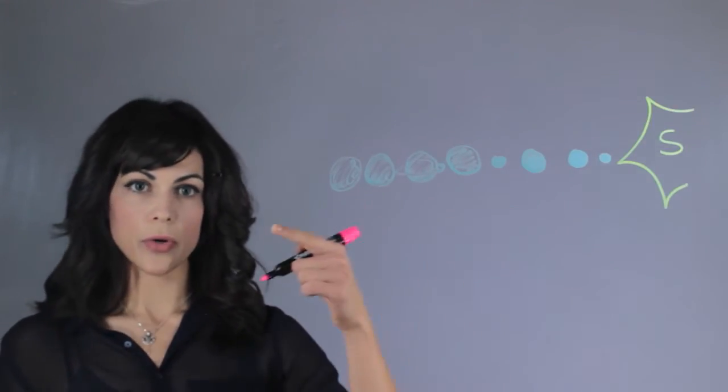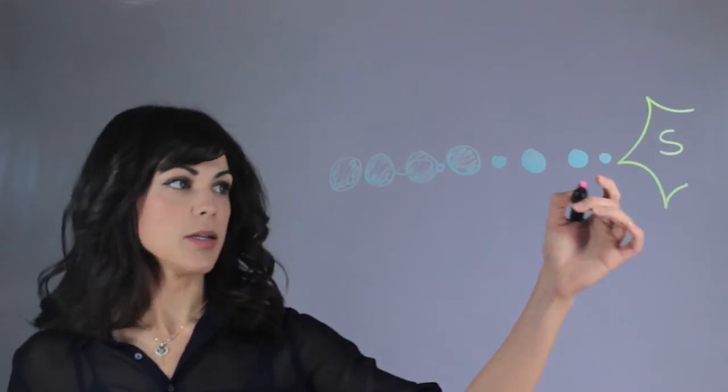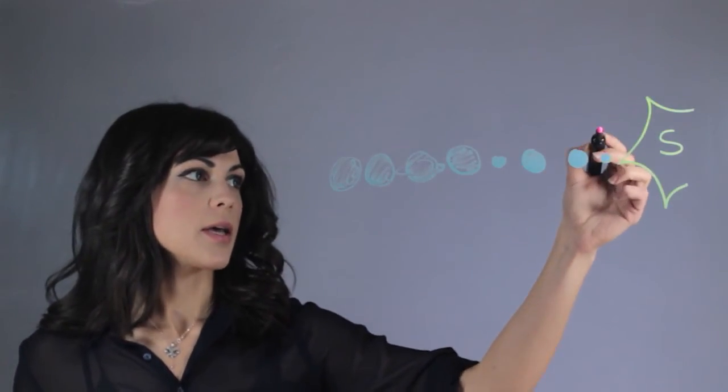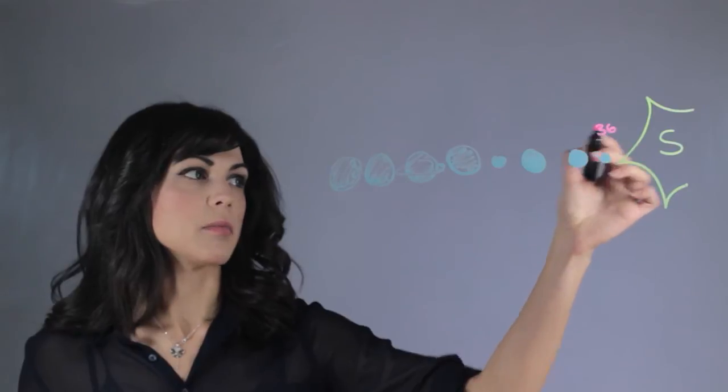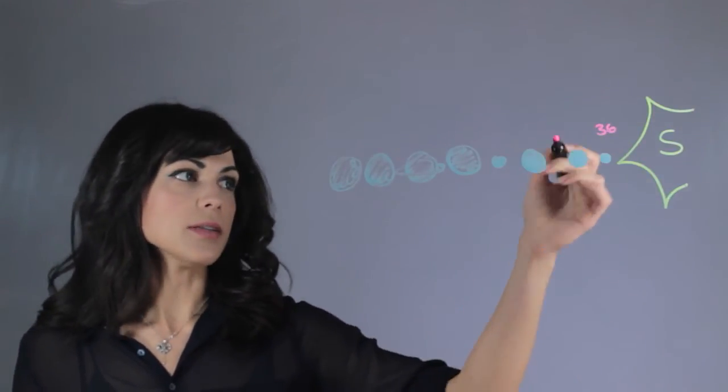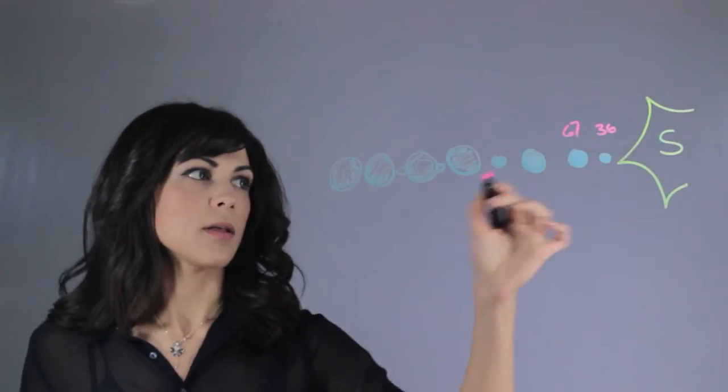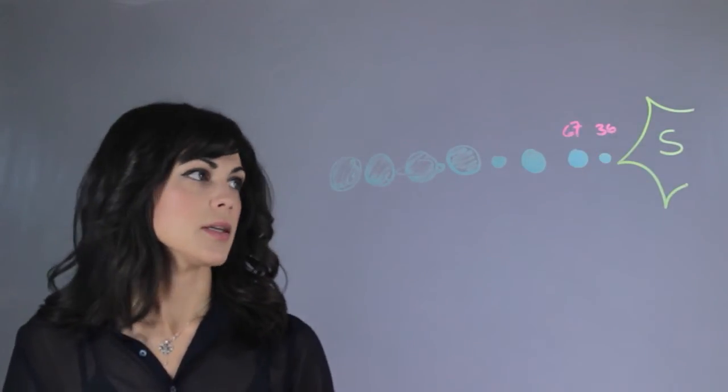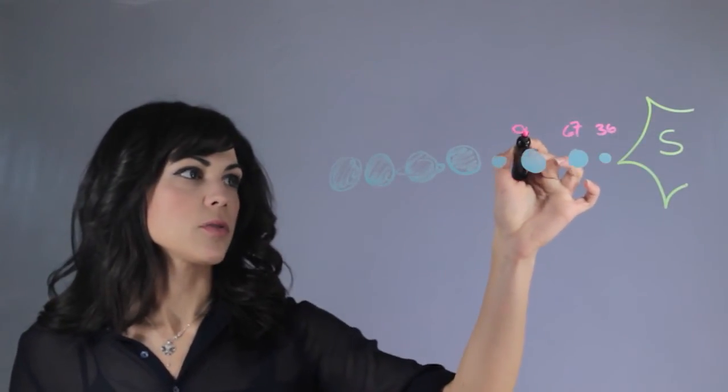Let's talk about our order in the solar system. We have the Sun, then Mercury, which is 36 million miles away from the Sun. Then we have Venus, which is 67 million miles away from the Sun, and then Earth, which is 93 million miles.